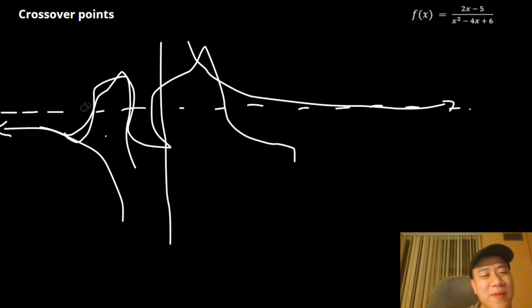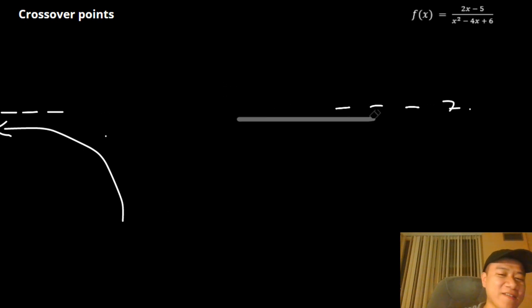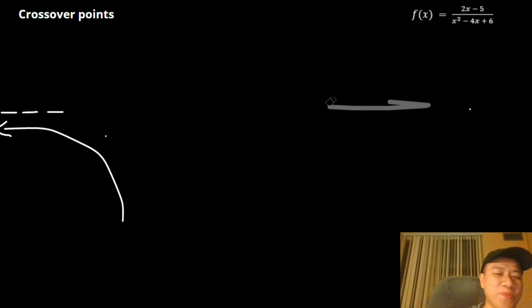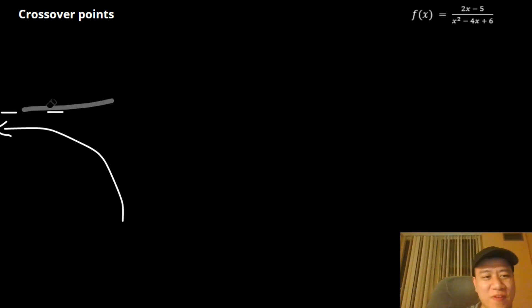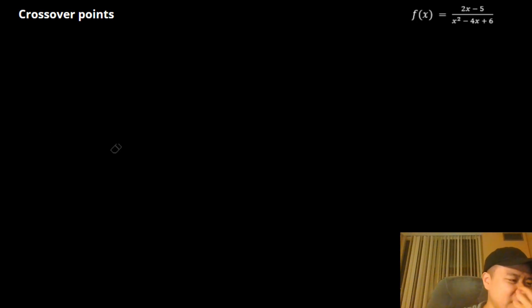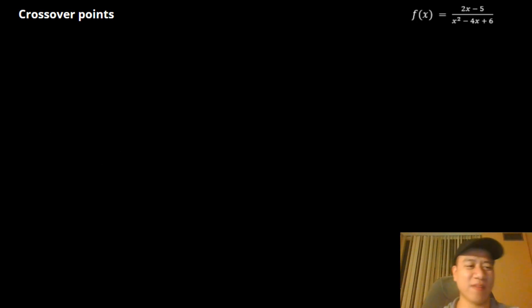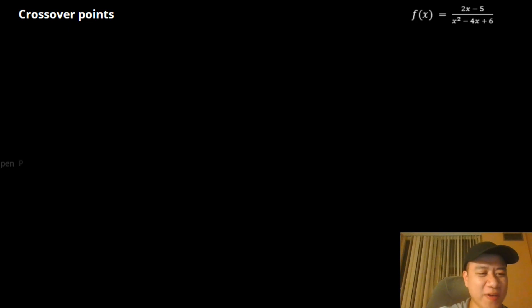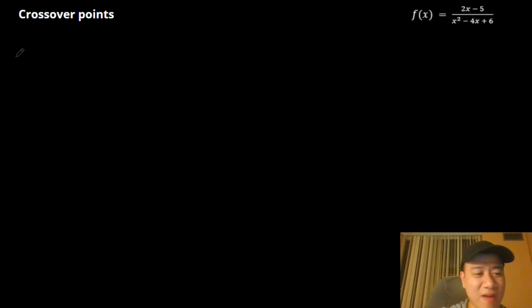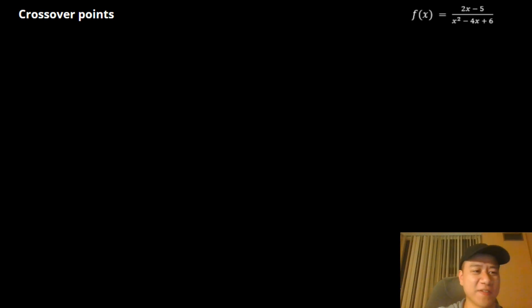The function can cross over, maybe once or twice, and this helps with graphing. Sometimes if you don't find crossover points, it doesn't really make sense how to connect all the information together — but with a crossover point, it really helps confirm the shape of the function.